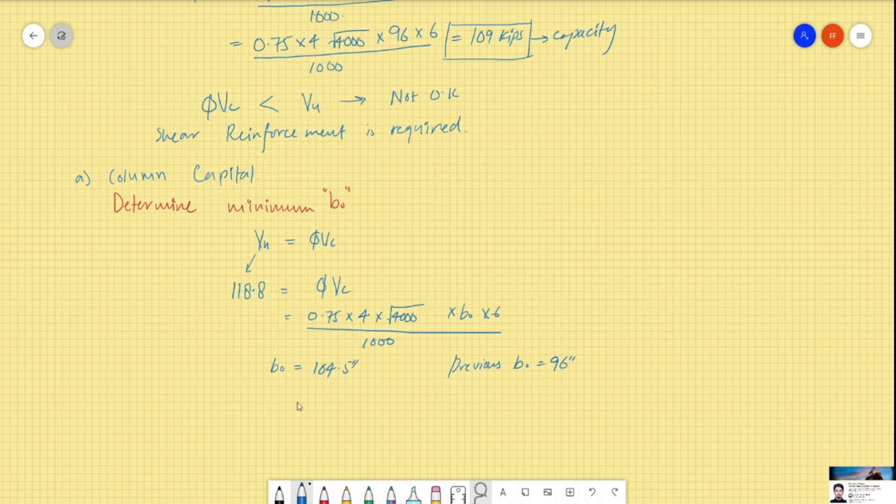So b0 comes out to 104. Now substituting b0, which is 4 times (c plus d), we can calculate that the column we require to have an adequate critical parameter. Now we need the column to be at least 21 inches.